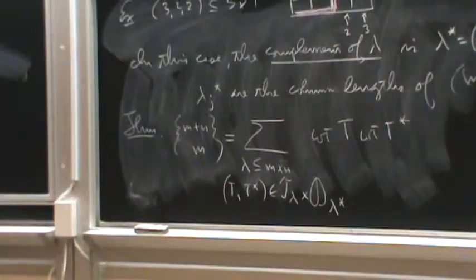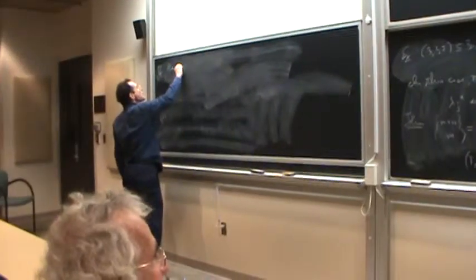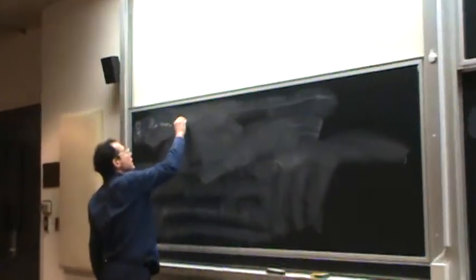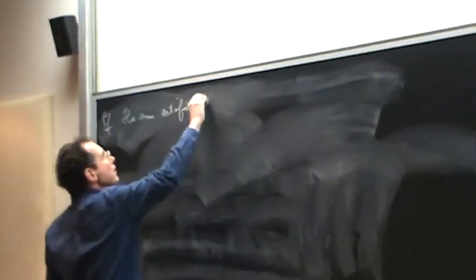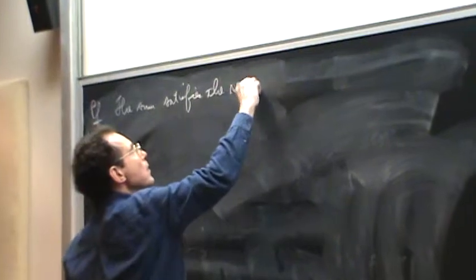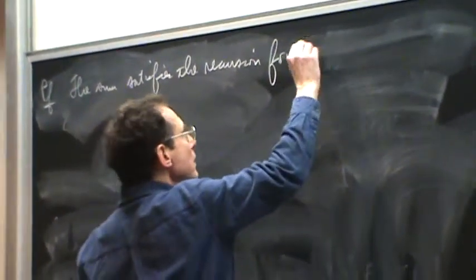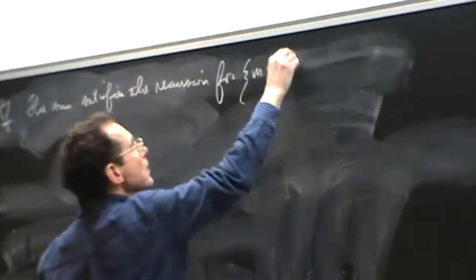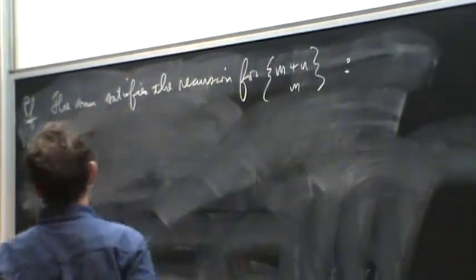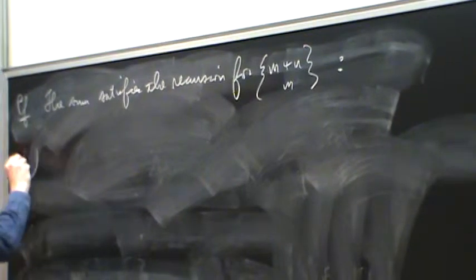So, I claim the sum satisfies recursion for M plus N choose M. Why? Well, again, it's one-picture proof. What is this?